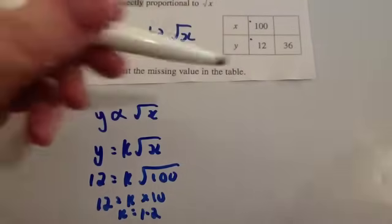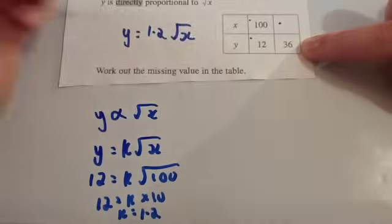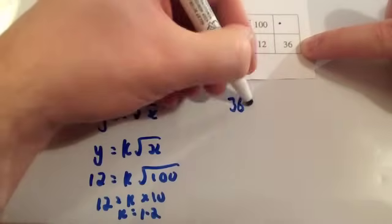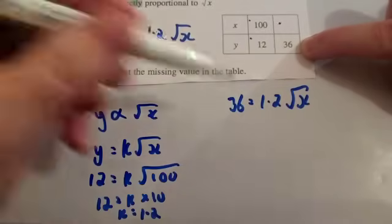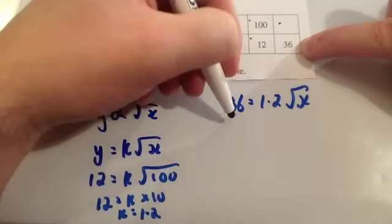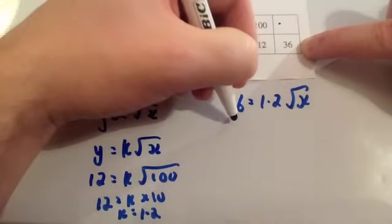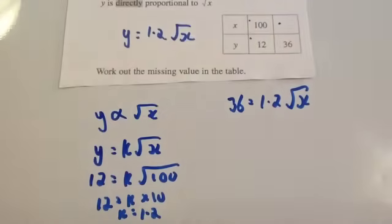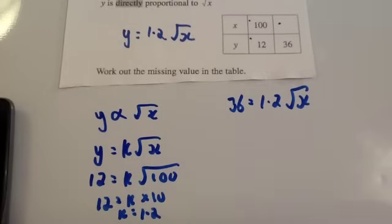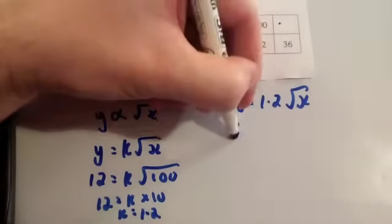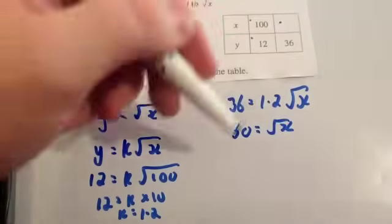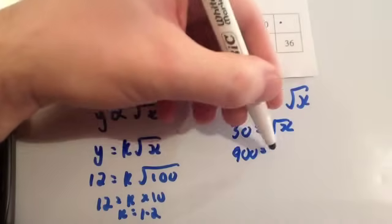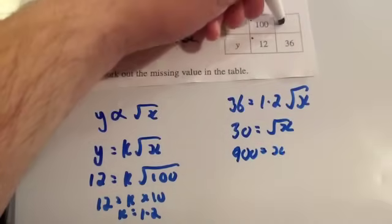We know Y equals 36, so we write 36 equals 1.2 times the square root of X. Divide both sides by 1.2 to get 30 equals the square root of X. We don't want the square root of X, so we square both sides: 900 equals X. So X equals 900.